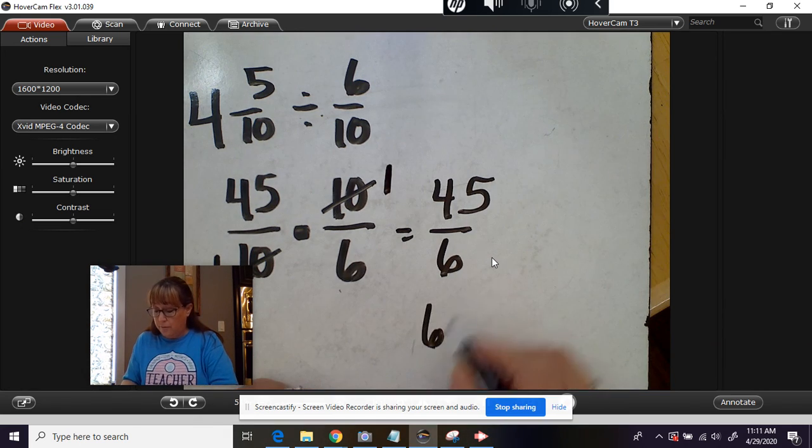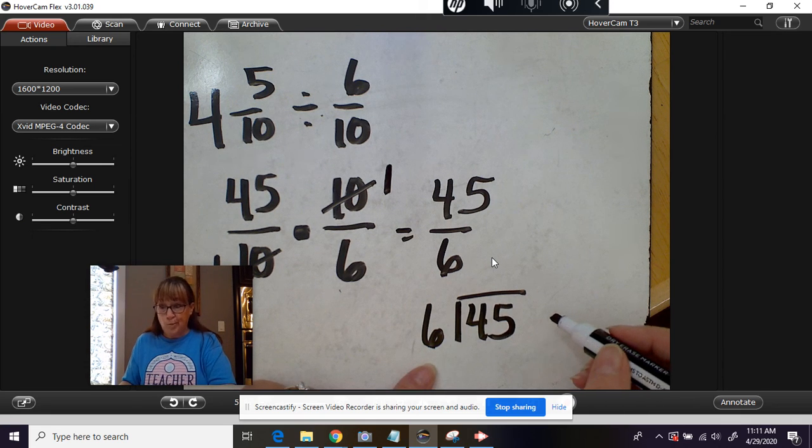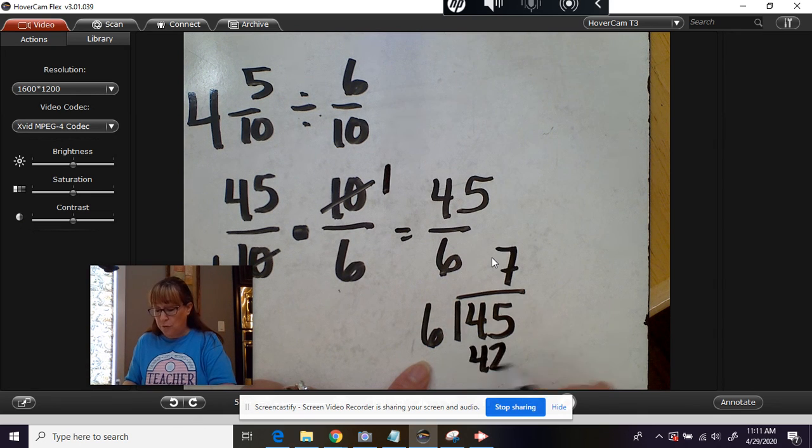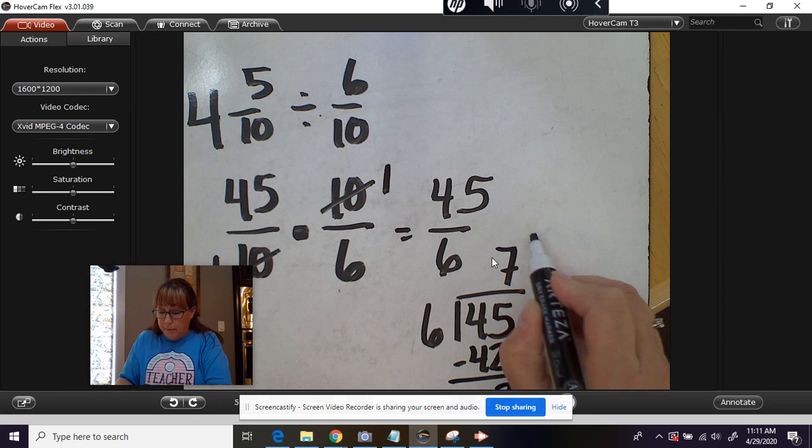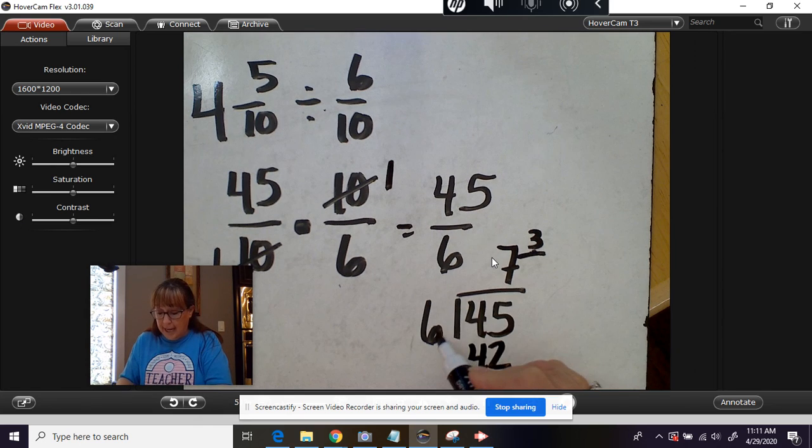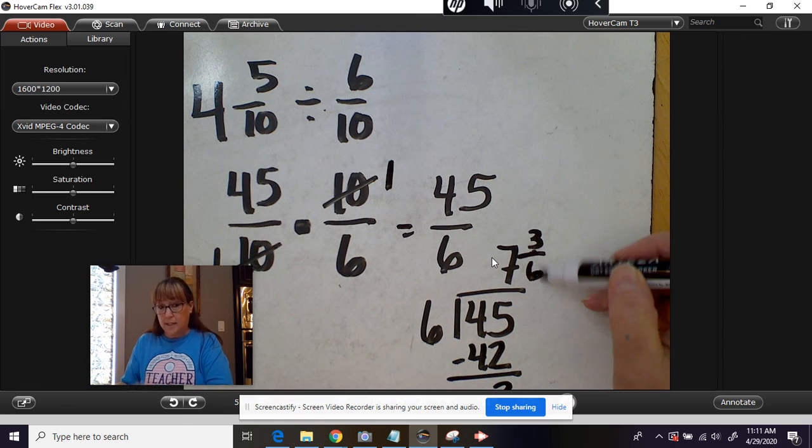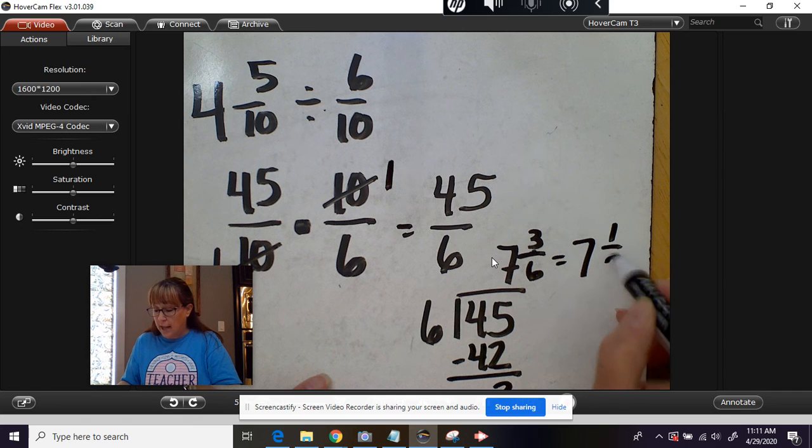Let's do our division. How many sixes are in 45? Six times seven is 42, leaving me with a remainder of three. That becomes my numerator. I keep the same denominator. If you look at three sixths, we know that's one half. So our answer is seven and one half.